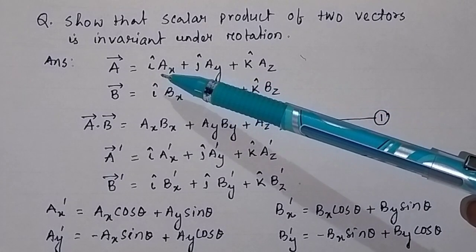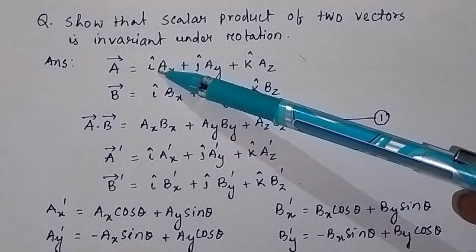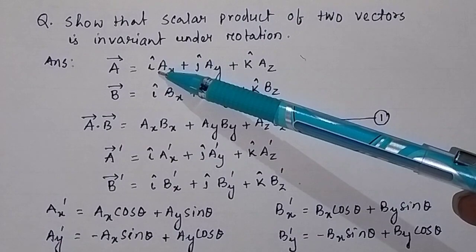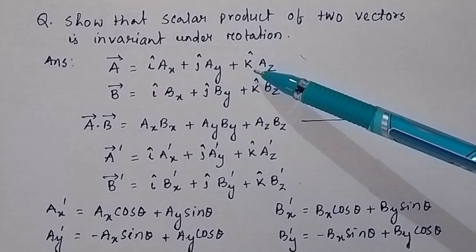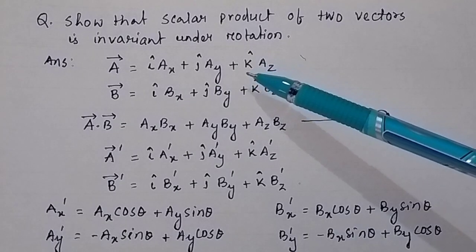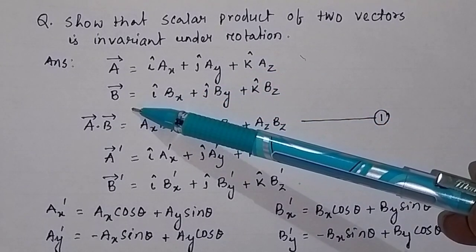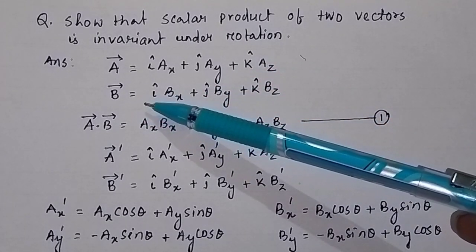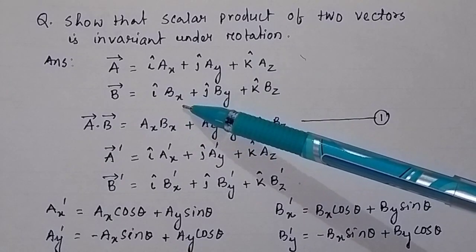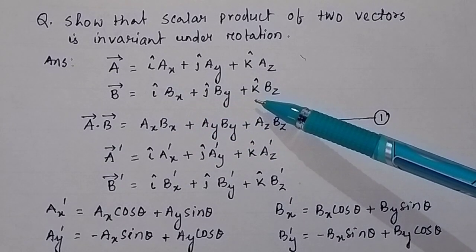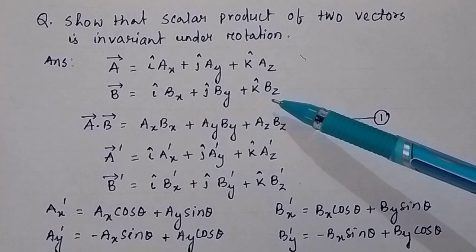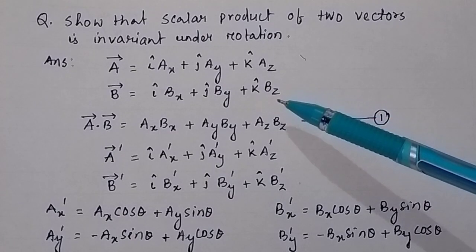Similarly, i-cap is the unit vector along X, j-cap is the unit vector along Y, and k-cap is the unit vector along Z. Similarly, vector B can be represented by i-cap BX plus j-cap BY plus k-cap BZ.